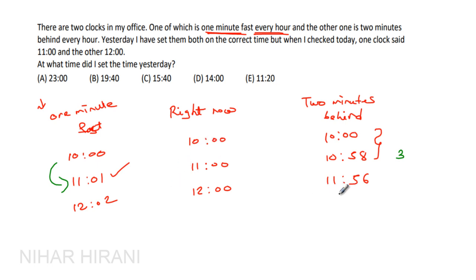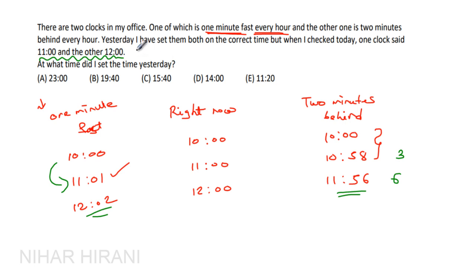After two hours there is an error of six minutes. This means every one hour there is an error of three minutes. The difference between the one-minute-fast clock and the two-minutes-slow clock increases by three minutes every hour. Now, in the question the difference between the two clocks is one hour, which is 60 minutes.